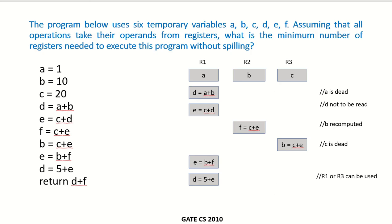This program uses six temporary variables A, B, C, D, E, F. Assuming that all operations take their operands from registers, what is the minimum number of registers required to execute this program without spilling?